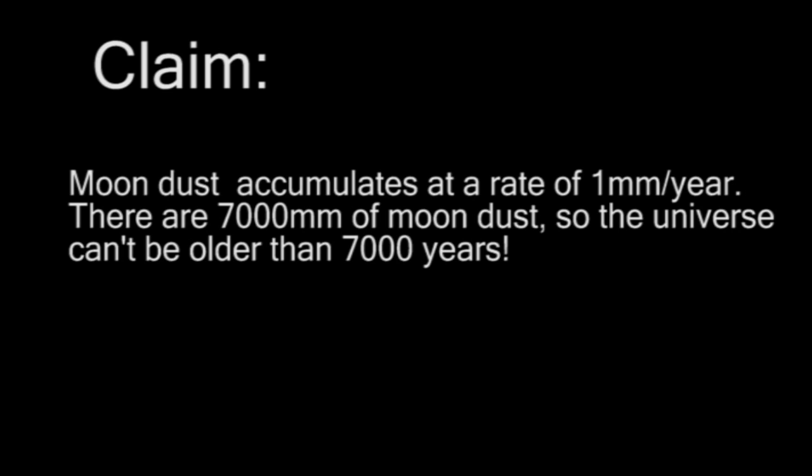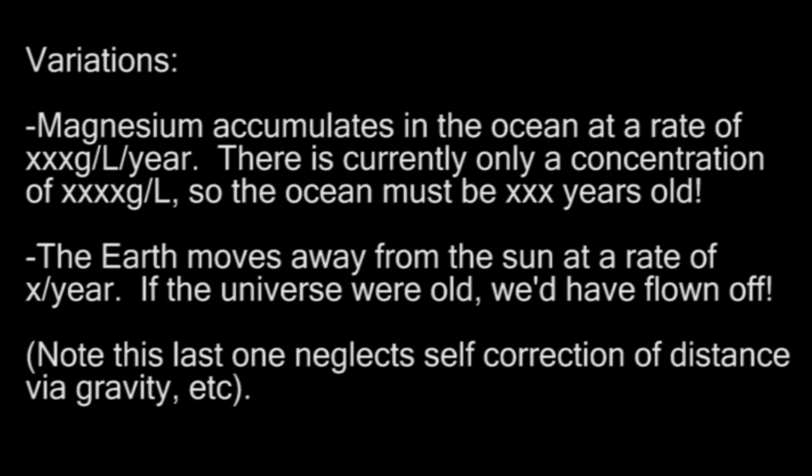The second creationist claim I want to address involves arguments dealing with constant rates — such as, let's say that moon dust is known to accumulate on the moon at a rate of 10 feet per X years. There are only 200 feet of moon dust on the surface of the moon; therefore, that proves that the universe is 200 times the accumulation rate old. The problem with this, and all variations of it, is that it's assuming a constant rate of deposition.